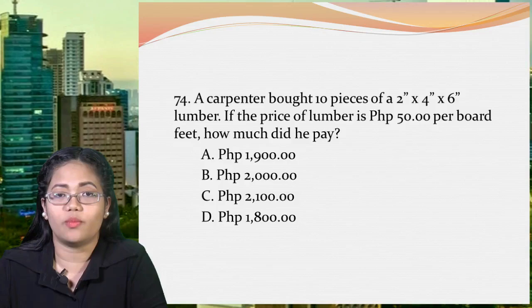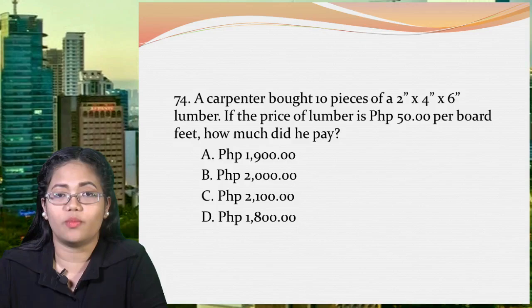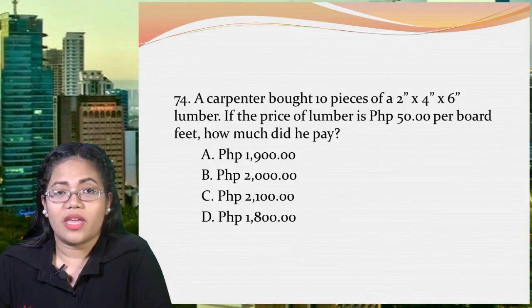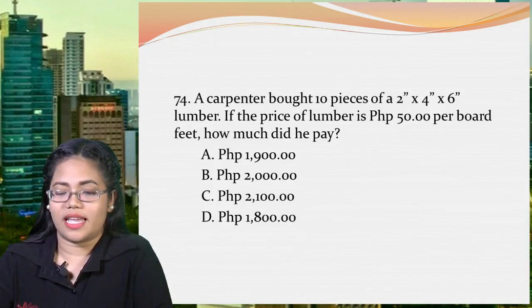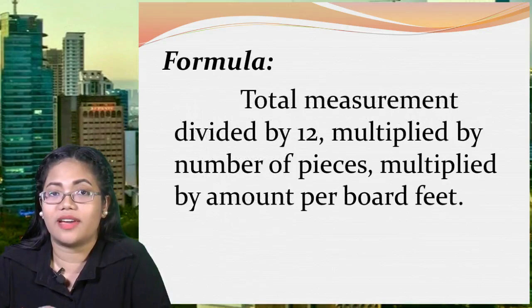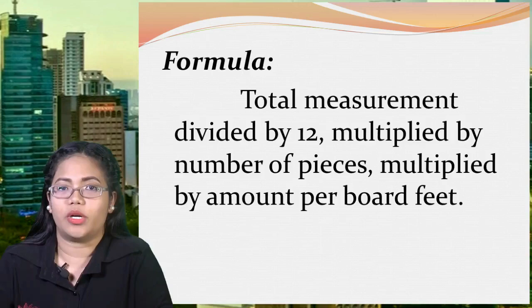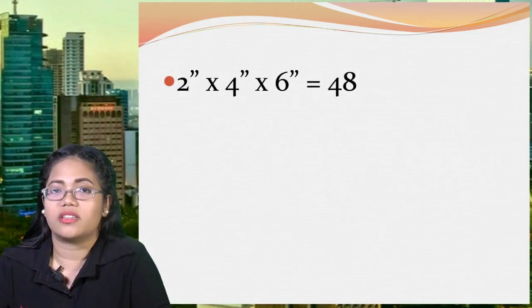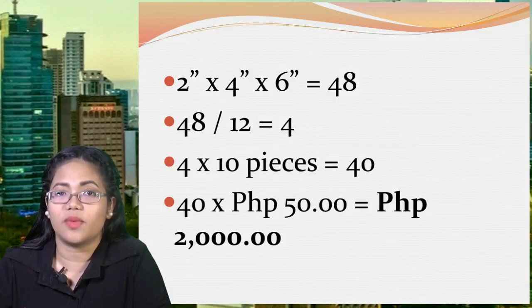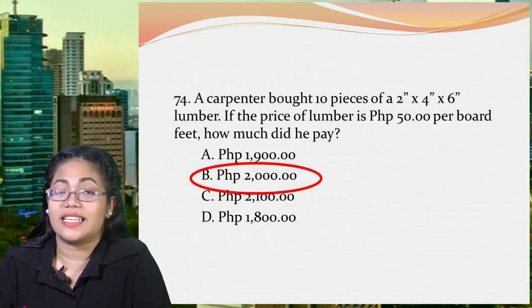Next: a carpenter bought 10 pieces of 2×4×6 lumber. If the price of lumber is ₱50 per board foot, how much did he pay? A: ₱1,900, B: ₱2,000, C: ₱2,100, or D: ₱1,800. The formula is: total measurement ÷ 12 × number of pieces × amount per board foot. So 2×4×6 = 48; 48 ÷ 12 = 4; 4 × 10 pieces = 40; 40 × ₱50 = ₱2,000. The correct answer is letter B, ₱2,000 pesos.